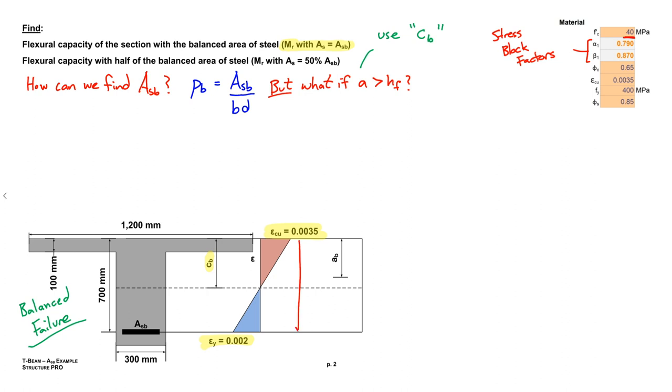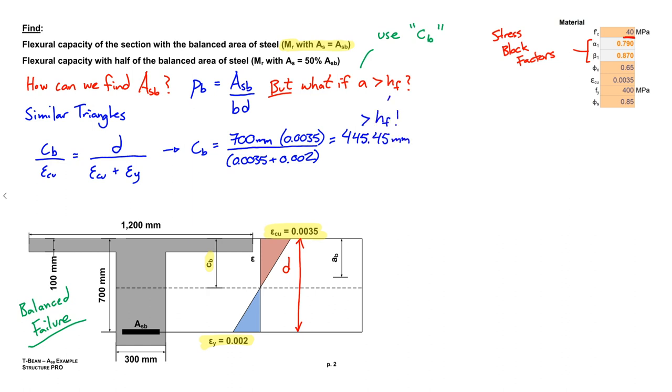So we can actually use similar triangles here to solve for CB. We know that CB divided by epsilon CU is going to equal D divided by epsilon CU plus epsilon Y. We have all these values except for CB, so let's solve for it. So it turns out CB is equal to about 445 millimeters. Alright, and that is greater than the depth of the flange, so it's a good thing we did this approach.